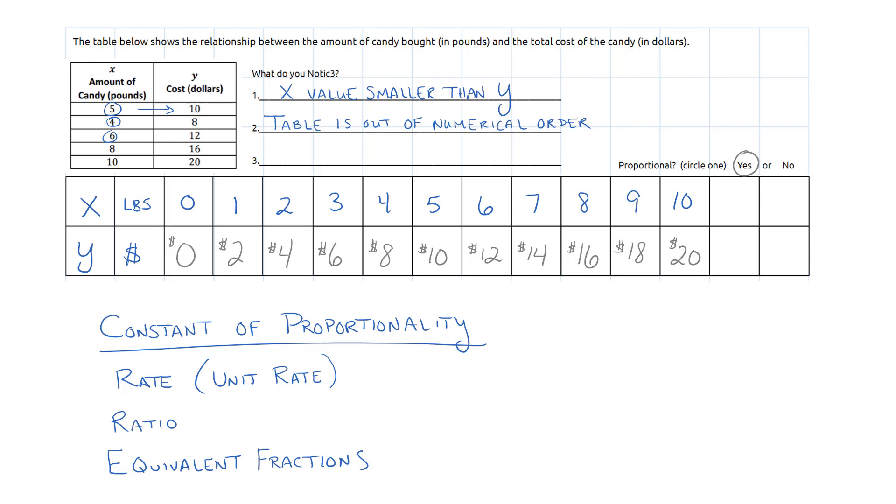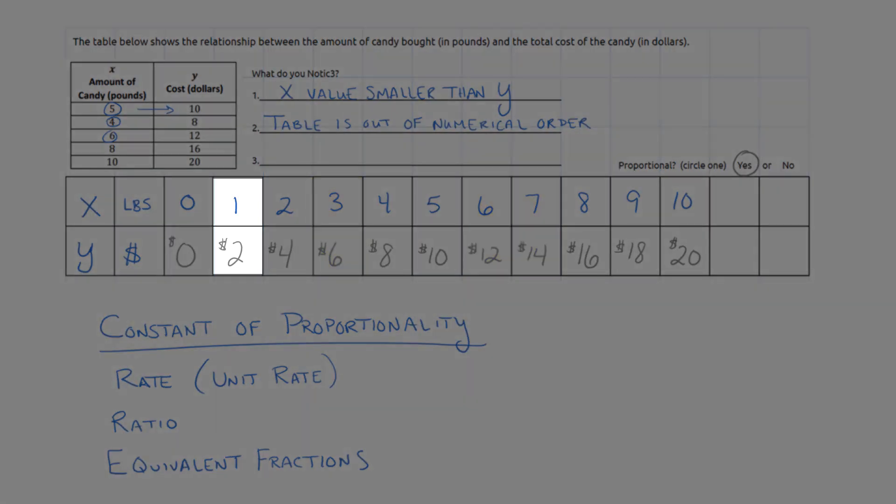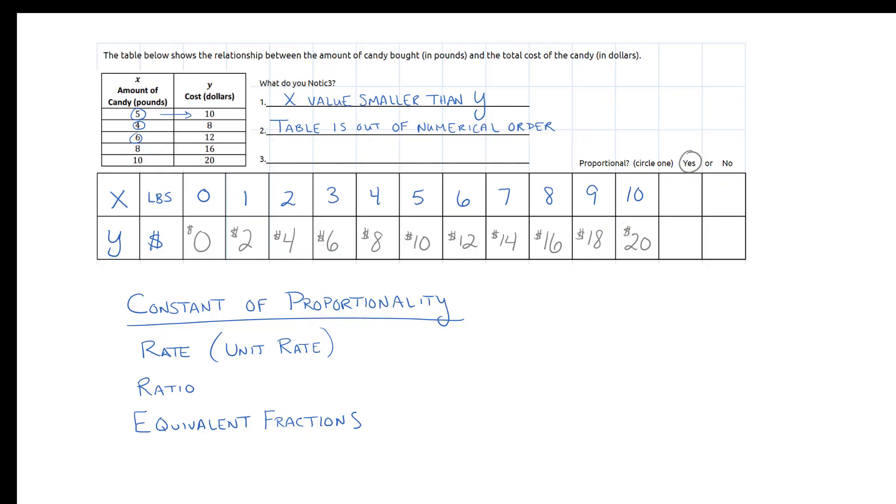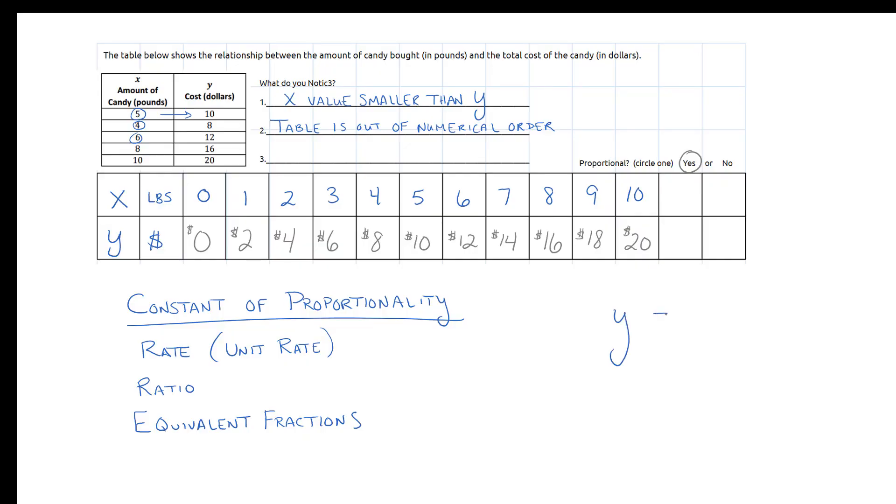And if you took any of these fractions, three over six, six over twelve, seven over fourteen, all of them reduced down back to our unit rate. Can we write the equation? The equation, the total is equal to, we're doing something to x in order so it becomes y. What is that something that we're doing?